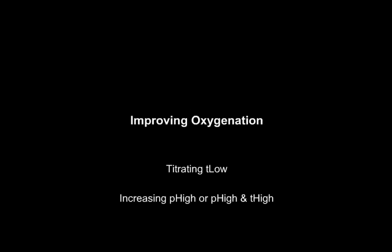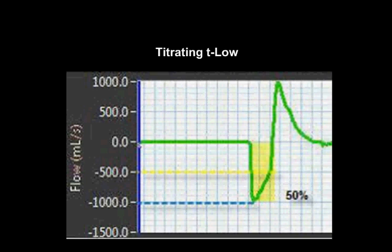Improving oxygenation. There are two main ways to improve oxygenation. One is titrating the T-low. To improve oxygenation, one of the first goals is to maximize the end-expiratory lung volume. To do this, we assess the termination point, and if the termination is under 50%, you want to decrease the release time until it is at least 75% of the peak expiratory flow.